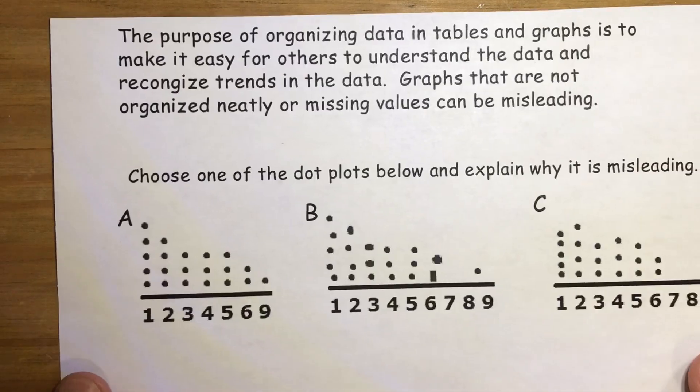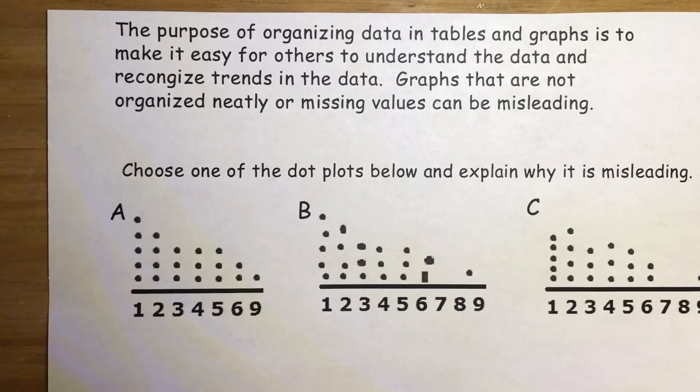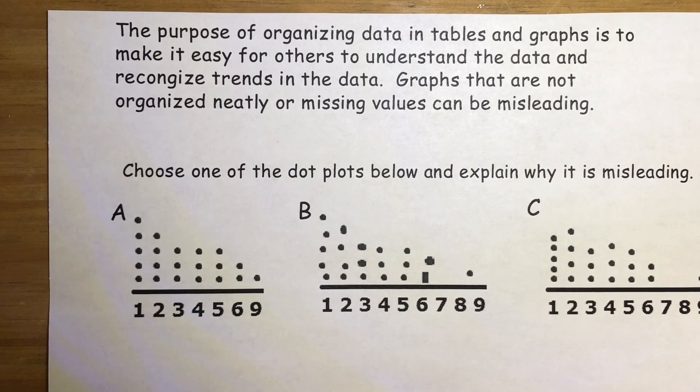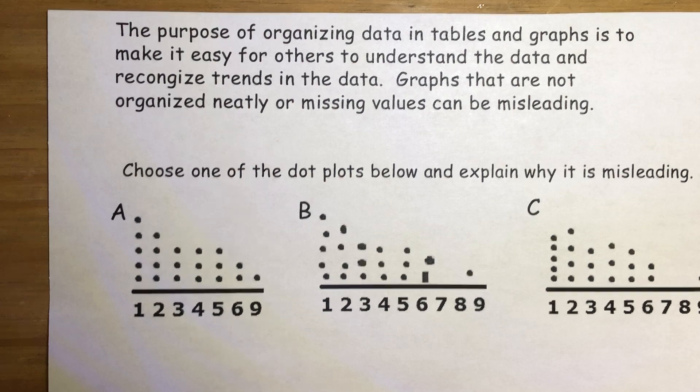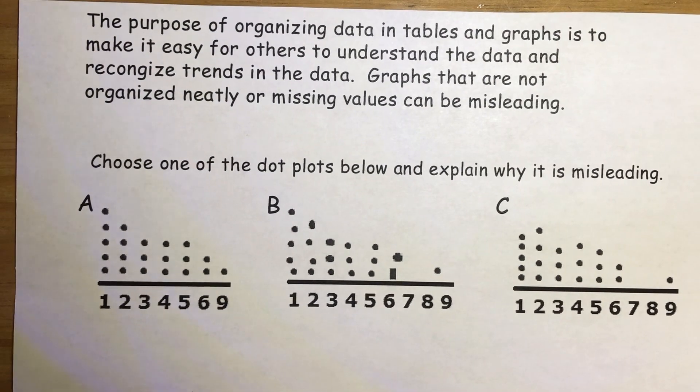The purpose of organizing data in tables and graphs is to make it easy for others to understand the data and recognize trends in the data. Graphs that are not organized neatly or are missing values can be misleading. So I want to ask you, which of these dot plots are misleading? And the bottom line is actually all three of them are. And I'm going to show you why.